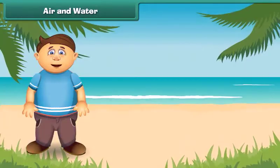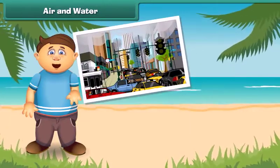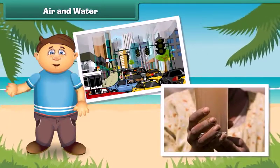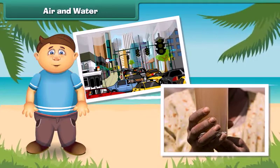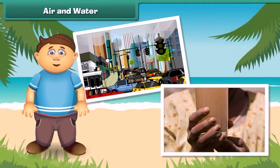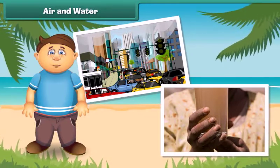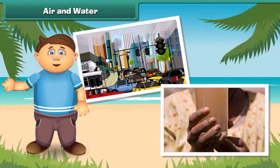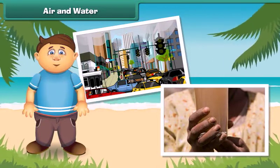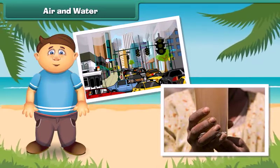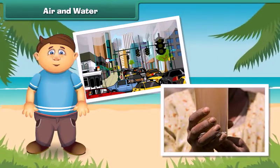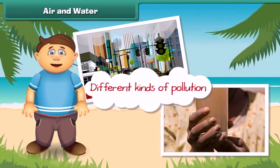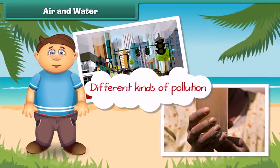As we all know that air and water mainly support life on the earth, but now these two are getting dirty day by day. As a result, there is no fresh air to breathe and clean water to drink. So let us discuss in detail different kinds of pollution.